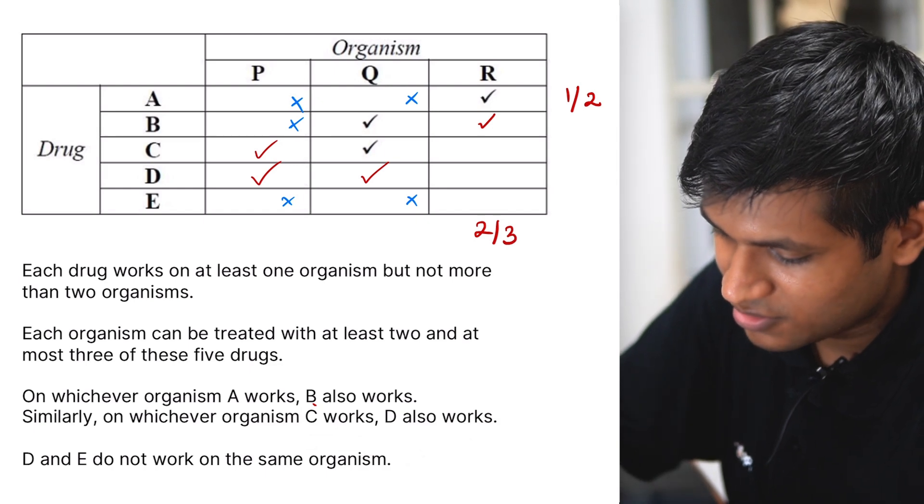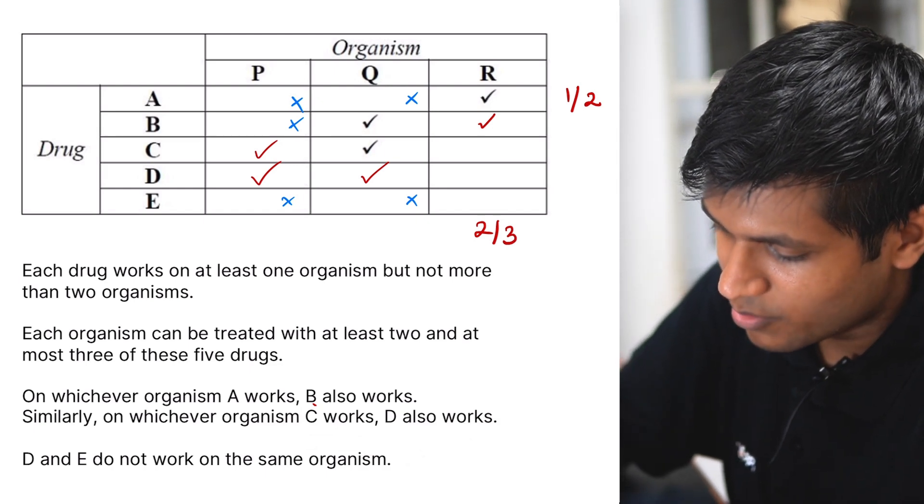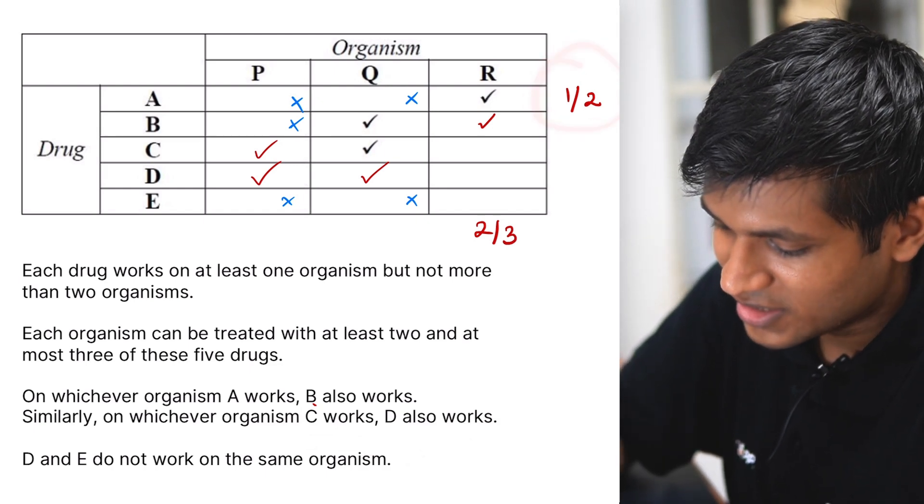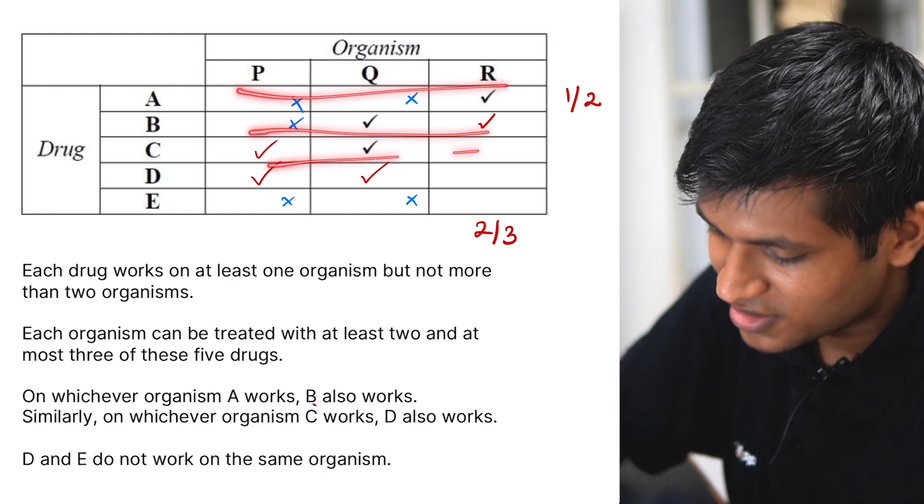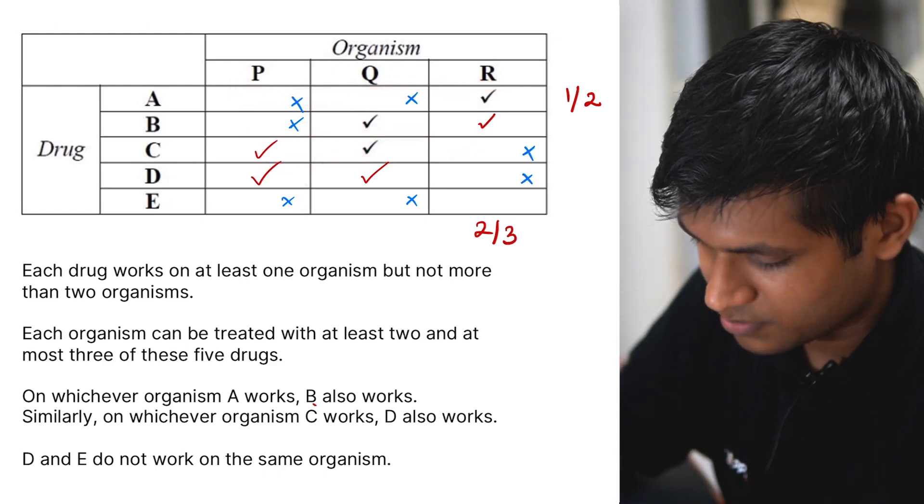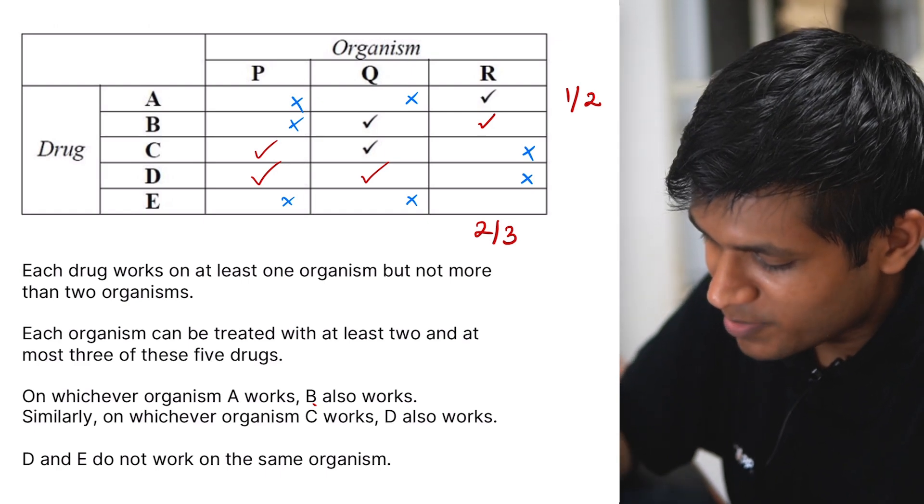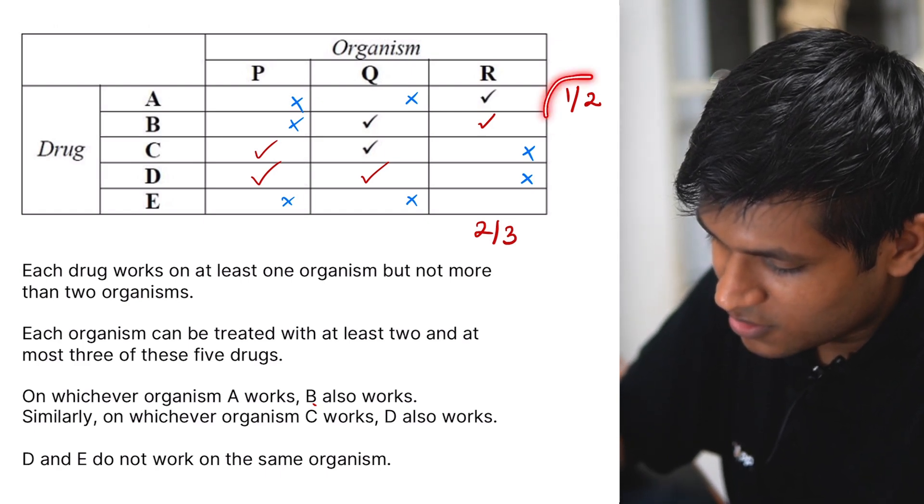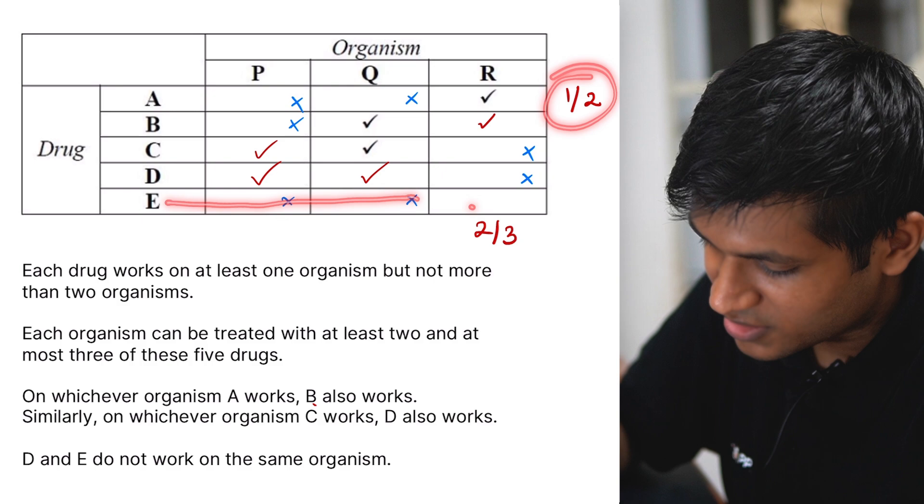Now that we have this information, and we know we can have a maximum of one or two ticks per row like this, we can cross off these two things. And we know we need a minimum of one, so for this we need one tick over here.